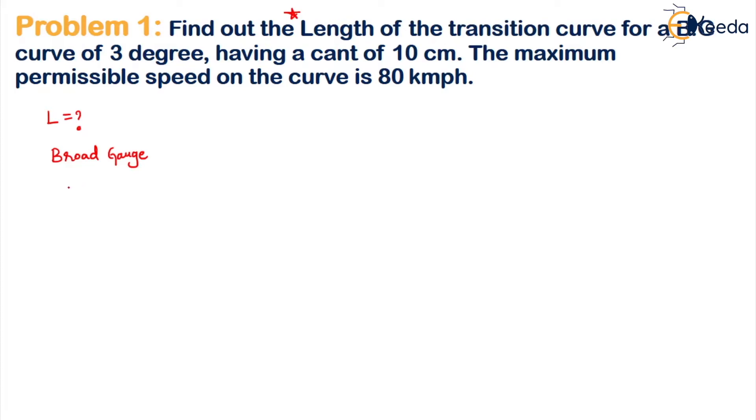The curve has 3 degrees, a cant of 10 centimeters (E = 10 cm), and the maximum permissible speed on the curve is Vmax = 80 kmph. These are the given data, and we need to find the length L.